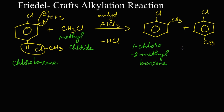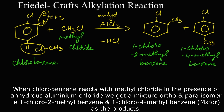Chlorobenzene in the presence of anhydrous aluminium chloride undergoes reaction in two ways — at the ortho position as well as at the para position — giving a mixture of 1-chloro-2-methylbenzene and 1-chloro-4-methylbenzene.